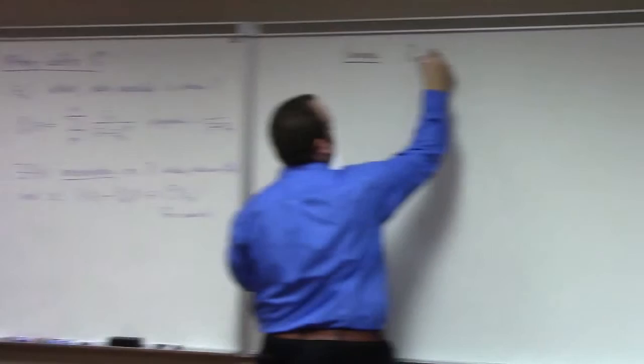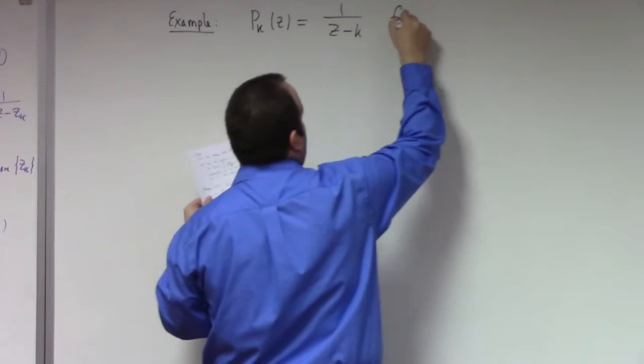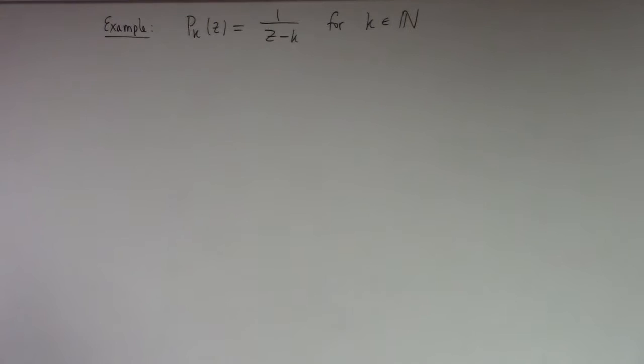What if you had p_k of z = 1 over (z minus k)? And this is for k in the natural numbers. And of course, the natural numbers do not include zero. Everyone knows that. Let's see here. So the naive thing to do would be what?